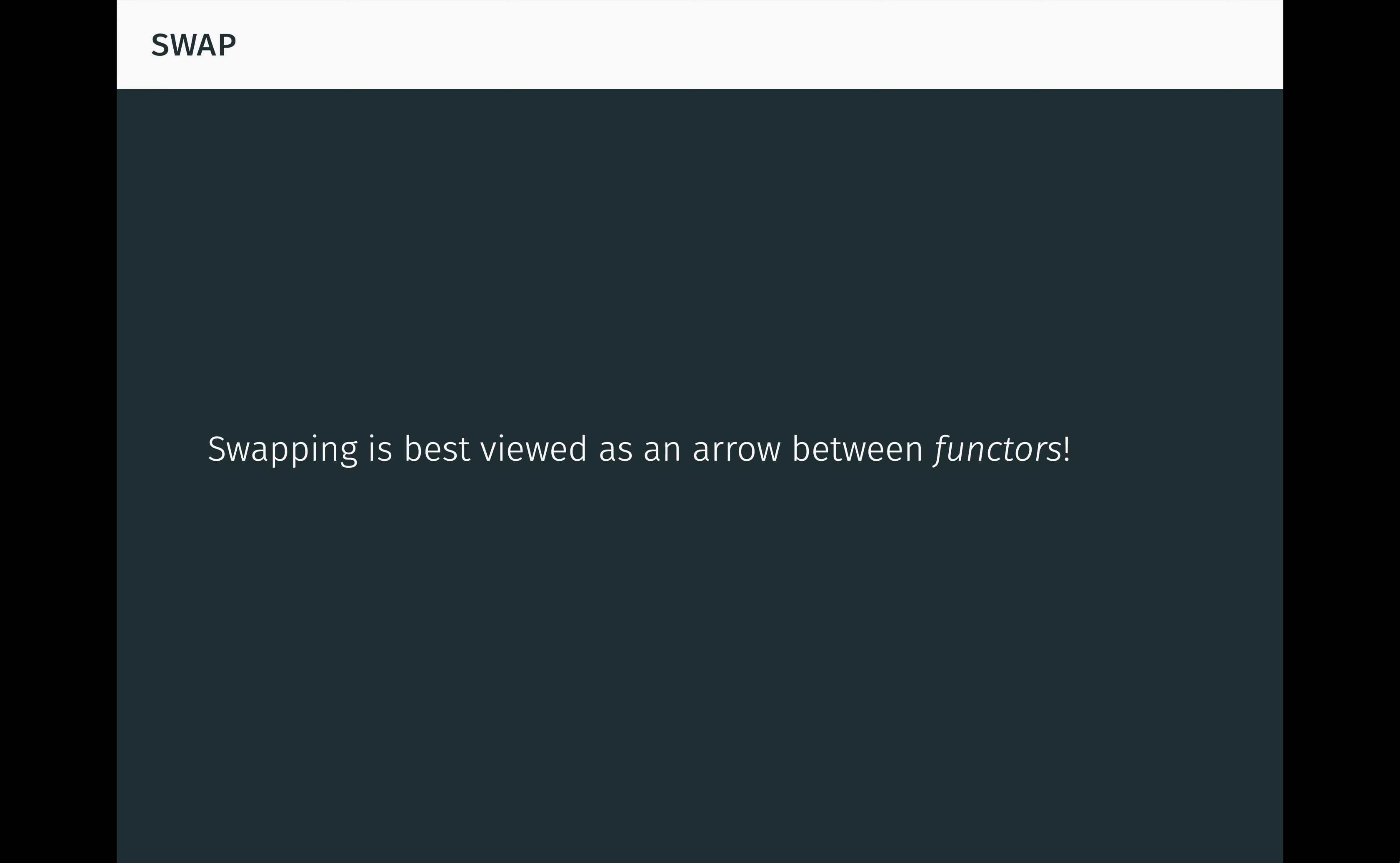This shows that the swap arrow must behave in the same way for any pair of objects. This also shows that swapping is best viewed not as an arrow between objects, but as an arrow between functors. In order to articulate this, we need a new category.